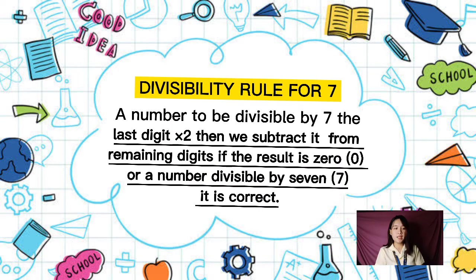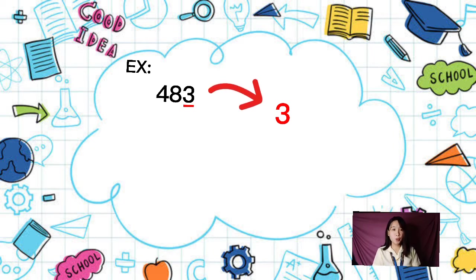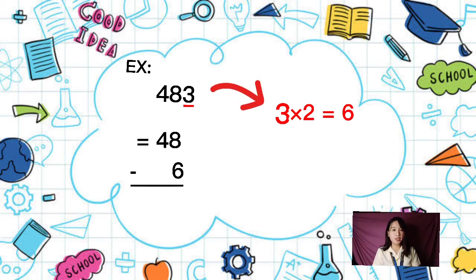A number is divisible by 7 if you take the last digit, multiply it by 2, then subtract the result from the remaining digits. If the result is 0 or divisible by 7, it is divisible by 7. For example, 483: the last digit is 3, so 3 times 2 is 6, and 48 minus 6 is 42. Since 42 is divisible by 7, 483 is divisible by 7.